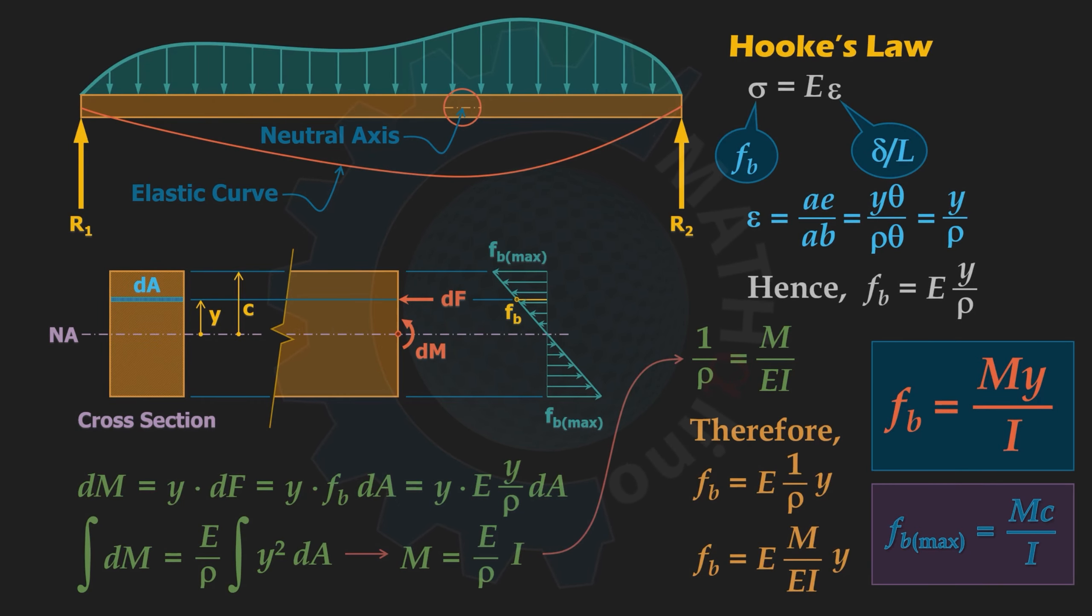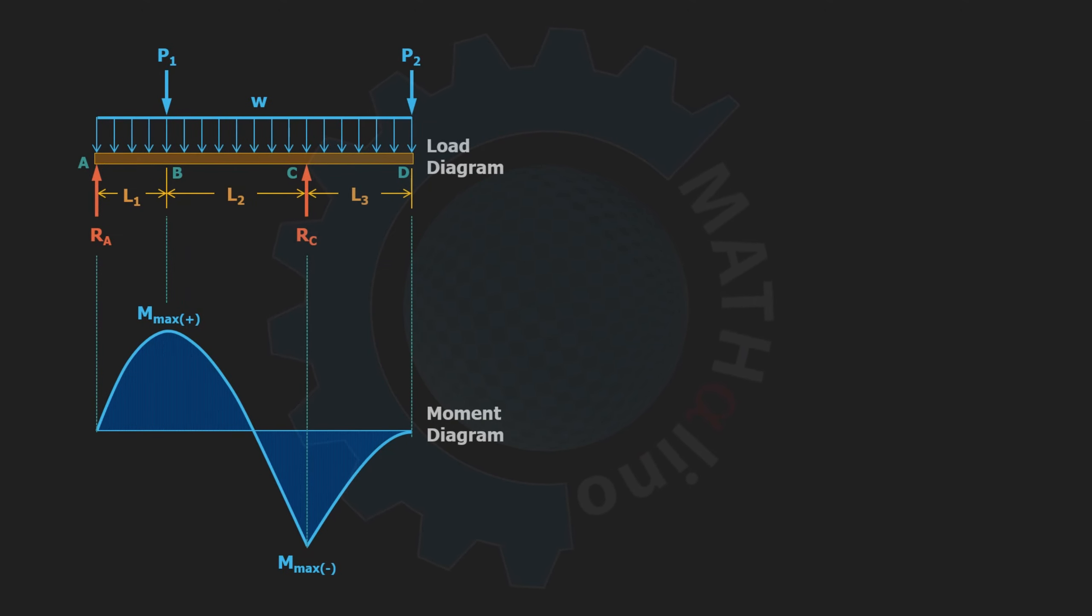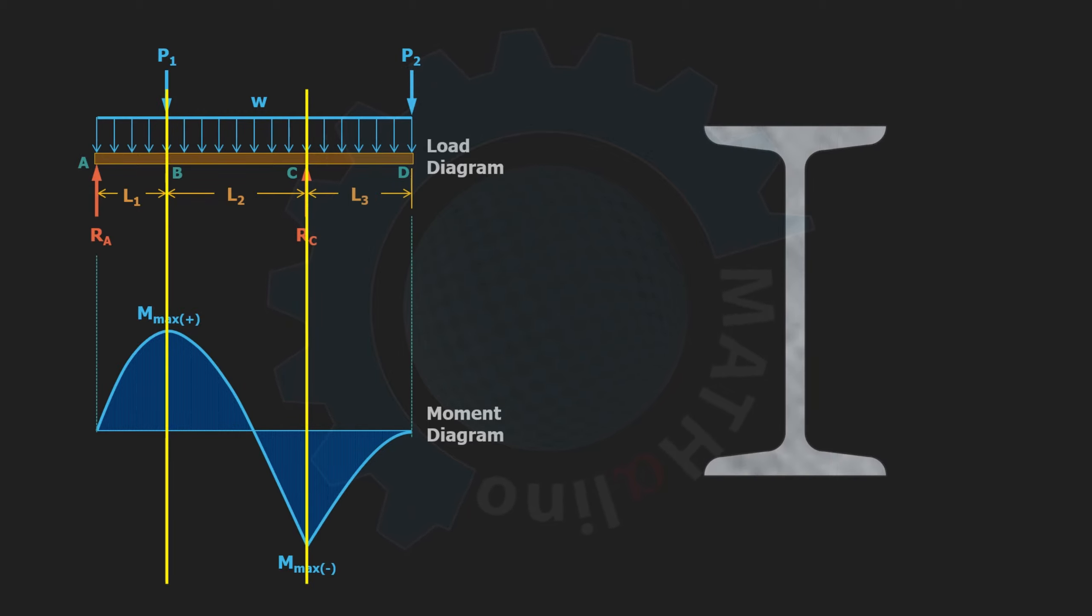And to find the maximum bending stress of the beam, of course you also need to find which section of the beam is subjected to the largest moment. Therefore, for the entirety of the beam, the maximum bending stress will occur at the section that is subjected to maximum bending moment, and at that section, the farthest fiber from NA carries the full magnitude of fb maximum.